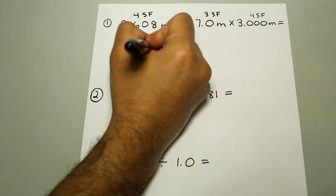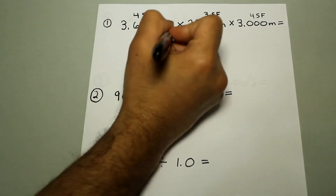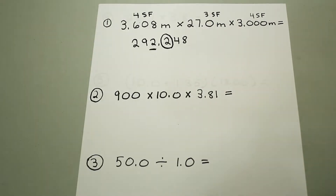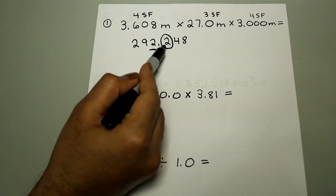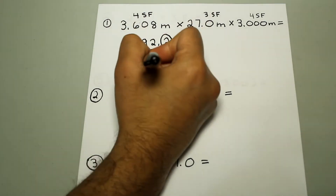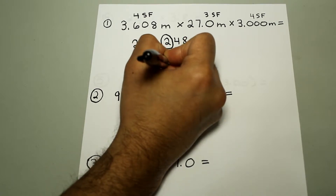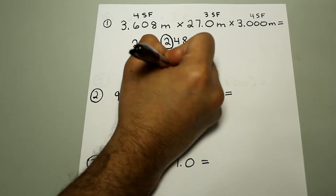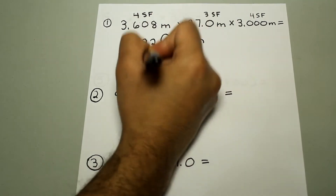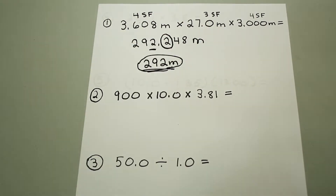Three significant figures means we round at the two. The number to the right of the two tells us if we should round up or down, and since it's less than five we round down. So the final answer is going to be 292 meters. Don't forget the units if there are units in your calculation.